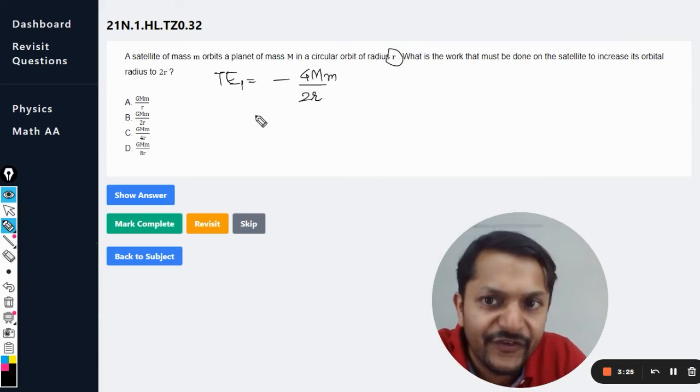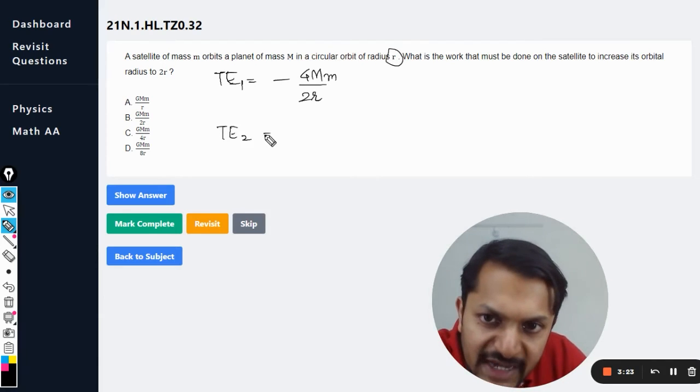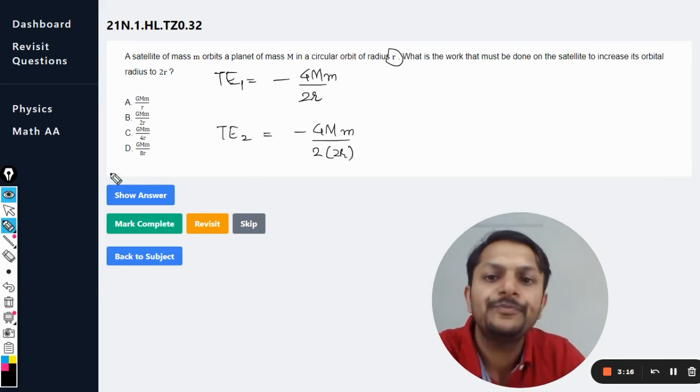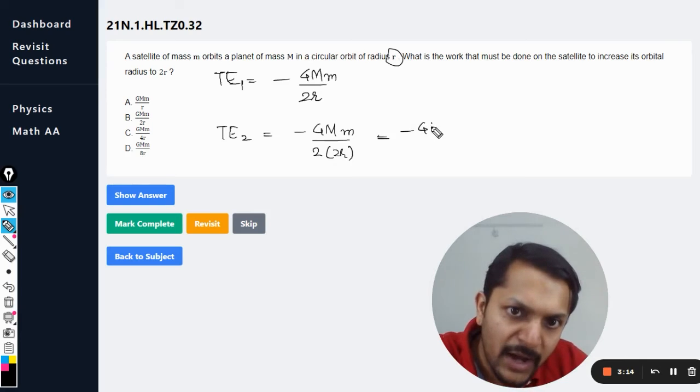First of all the radius was r, so I can say that this is the first total energy. Now the second total energy is given by the radius being 2r, so it becomes minus GMm divided by 4r.